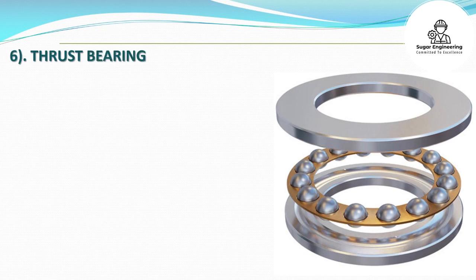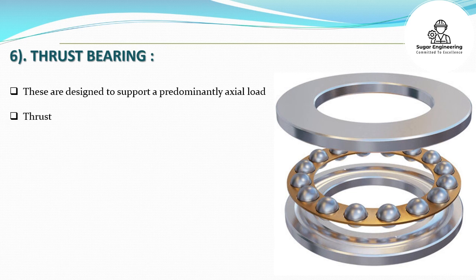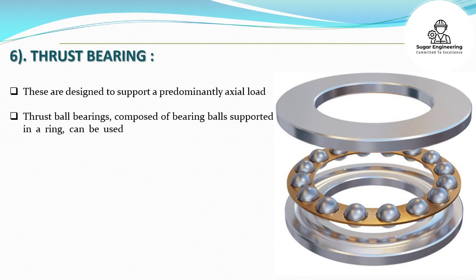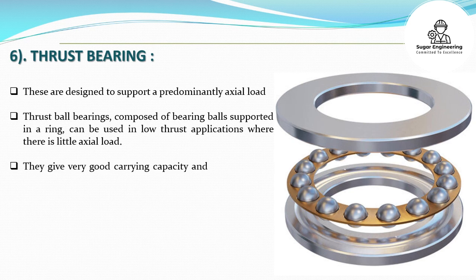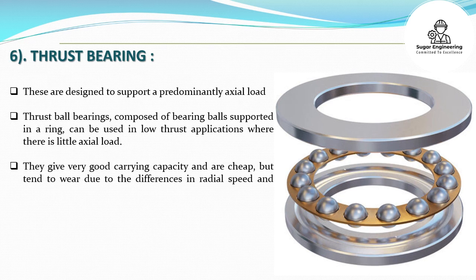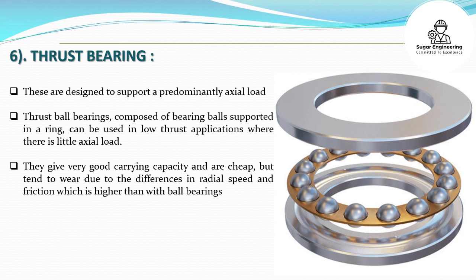Thrust bearings are designed to support a predominantly axial load. Thrust ball bearings, composed of bearing balls supported in a ring, can be used in low thrust applications where there is little axial load. They give very good carrying capacity and are cheap, but tend to wear due to differences in radial speed, and friction is higher than with ball bearings.